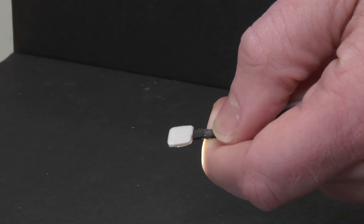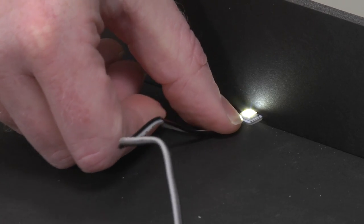Just peel the backing off of the light. Carefully position the light before applying it to the surface.